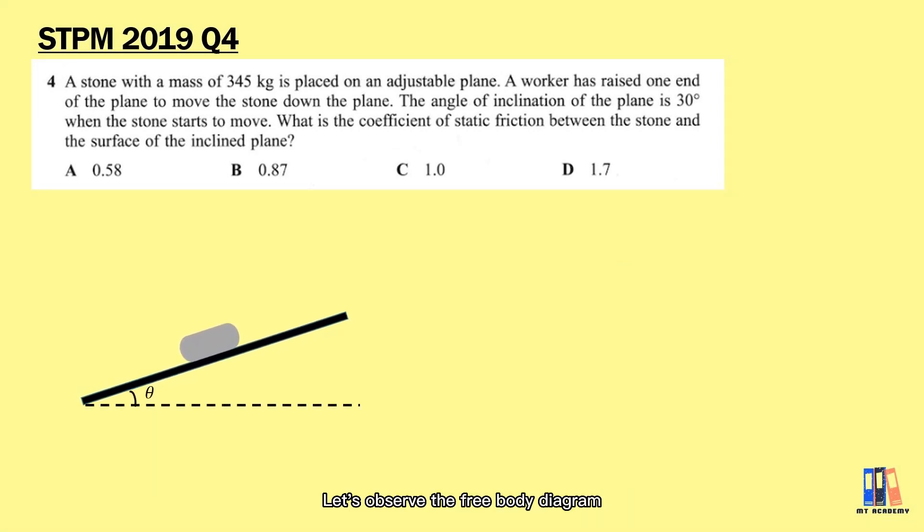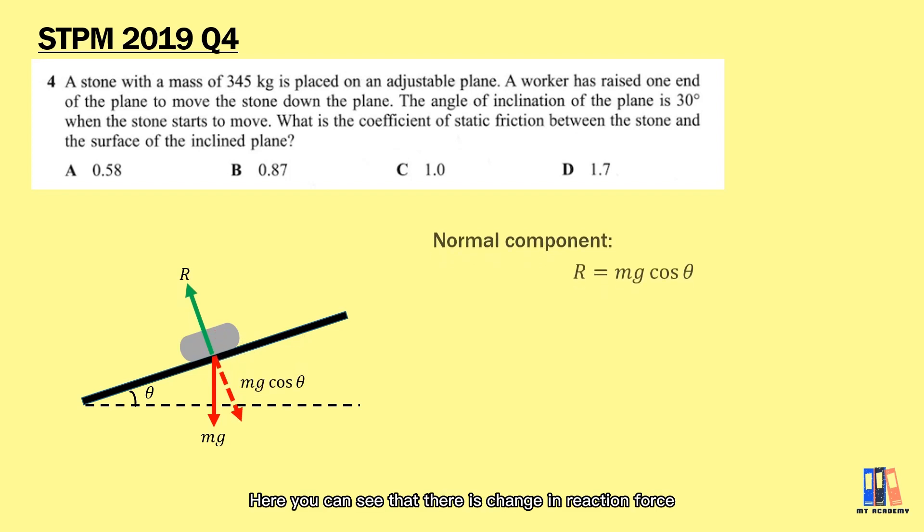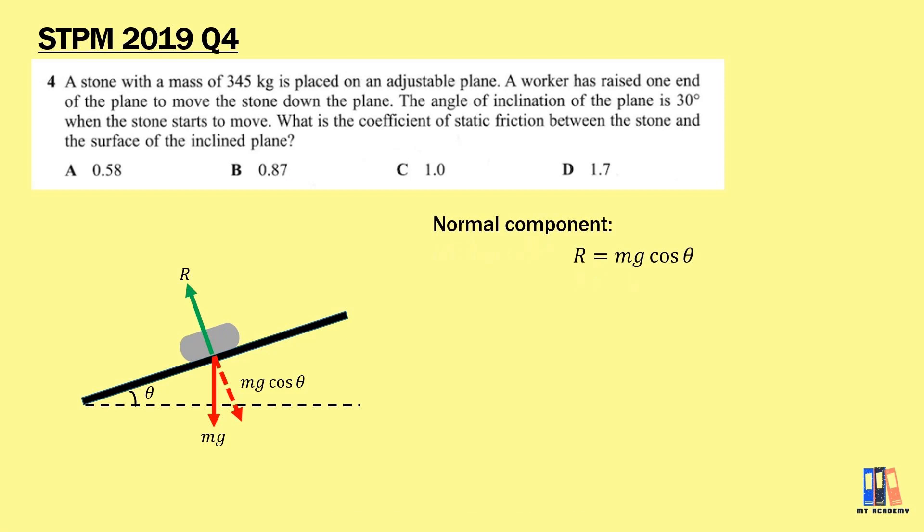But let's observe the free body diagram where the plane is inclined. Here you can see that there is a change in reaction force. Since the weight of the object is always downward, you can see that in the normal component, reaction force is not exactly equal to mg but equal to the perpendicular component of the weight mg cos θ. This is very important which could be a common careless mistake neglected by many students. Do remember to check the reaction force, especially when the surface is not horizontal.